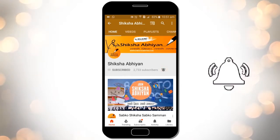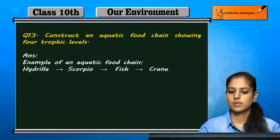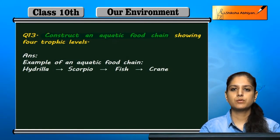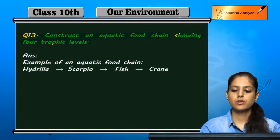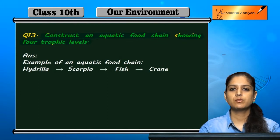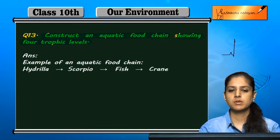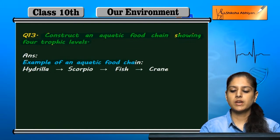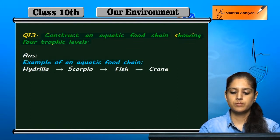Question number 13: construct an aquatic food chain showing four trophic levels. We have four trophic levels, so here is an example of an aquatic food chain.